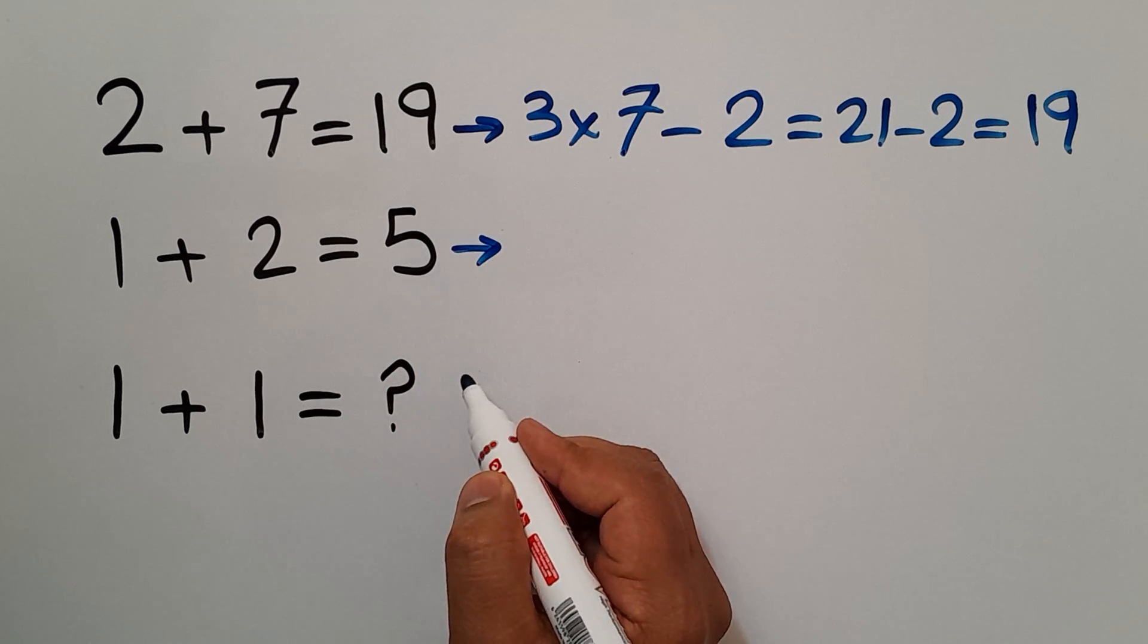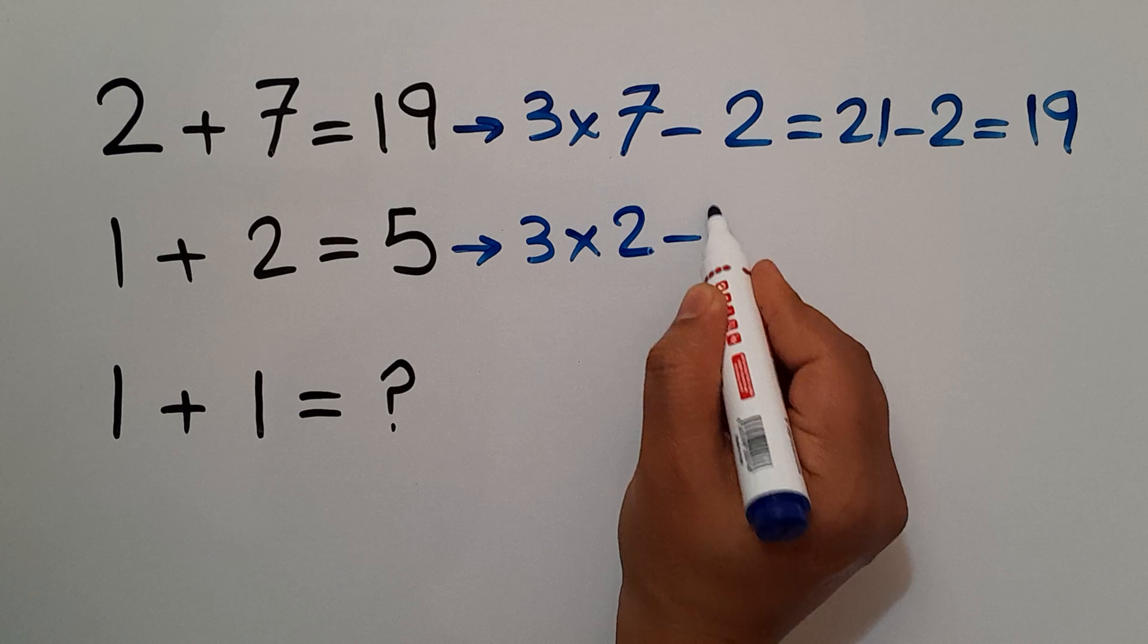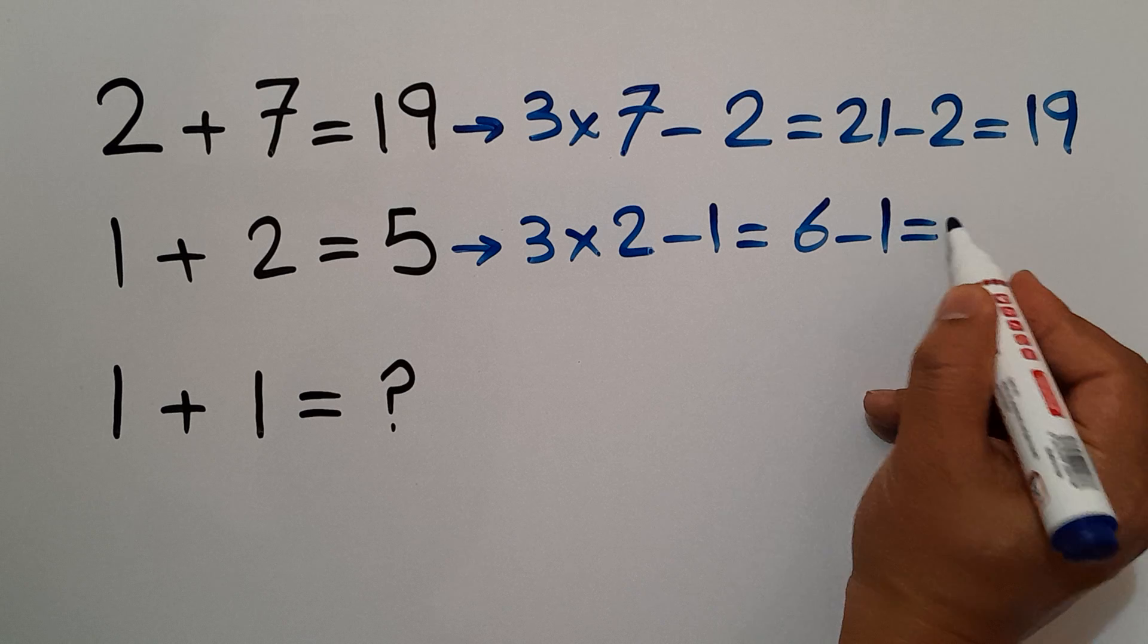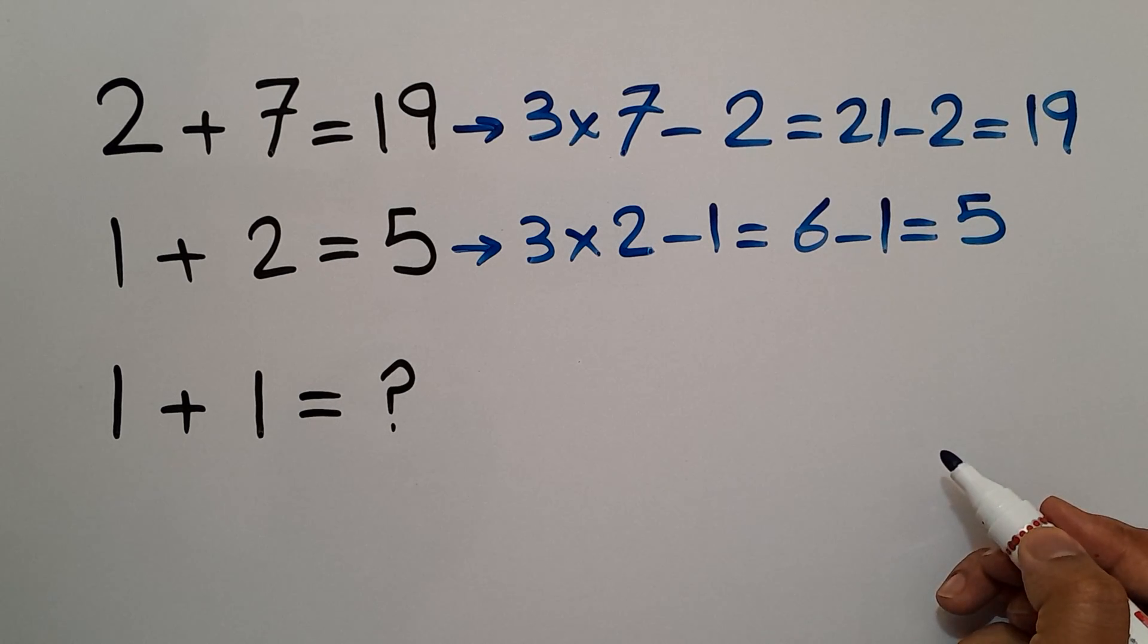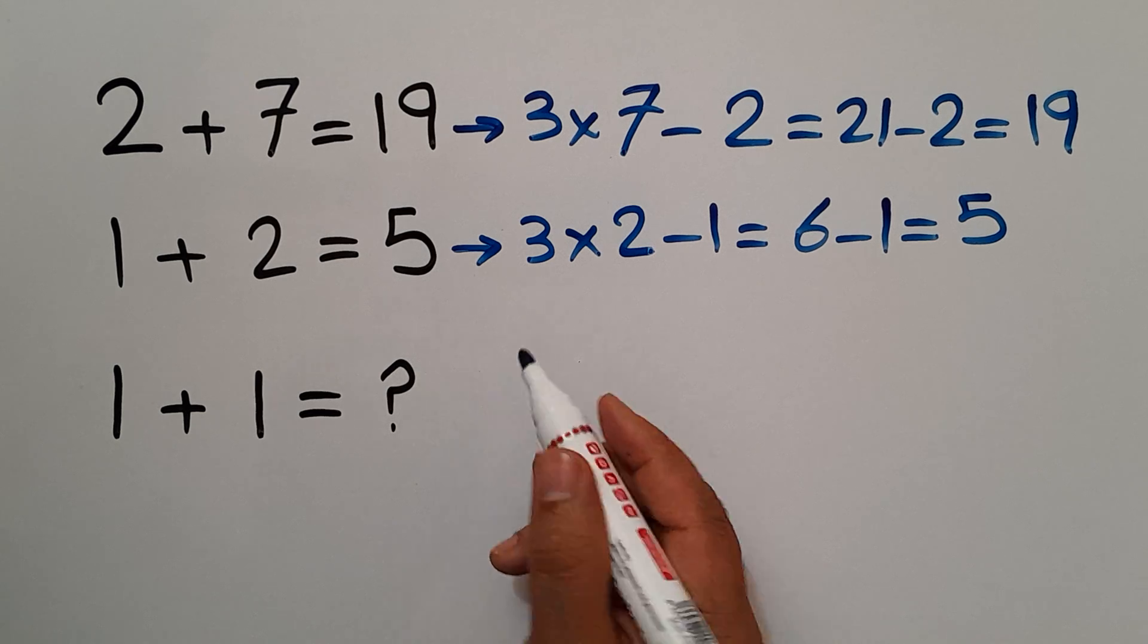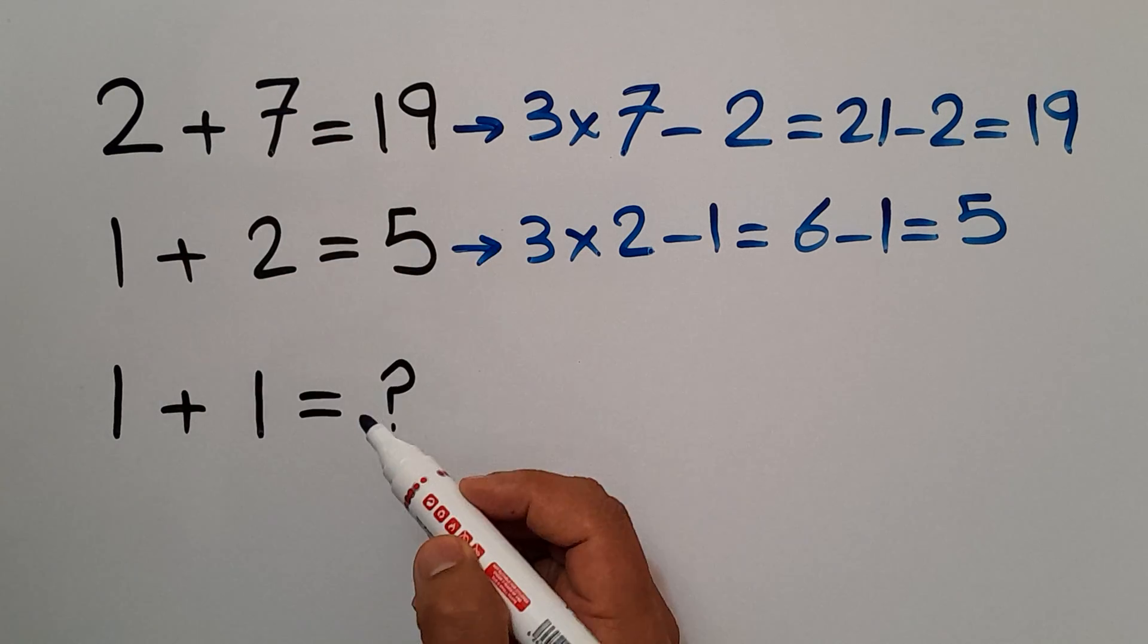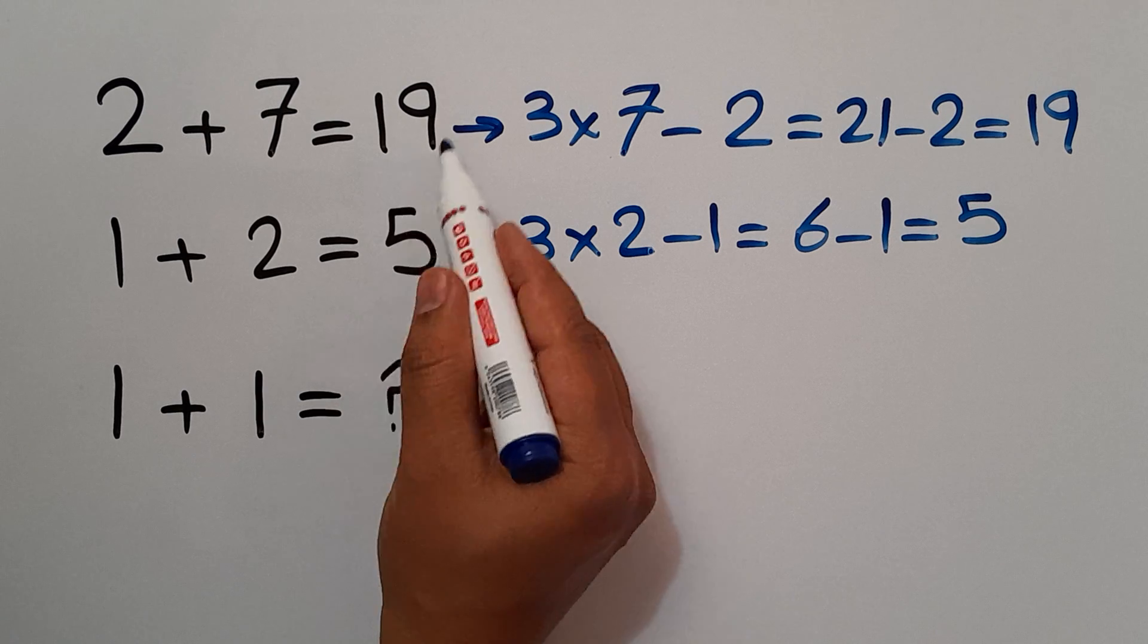Okay, the right hand side number. So therefore the pattern that exists here is three times second number minus the first number equals the third number or the right hand side number.